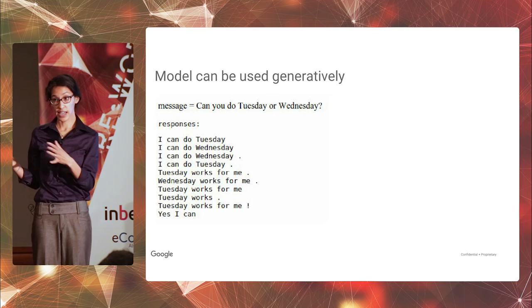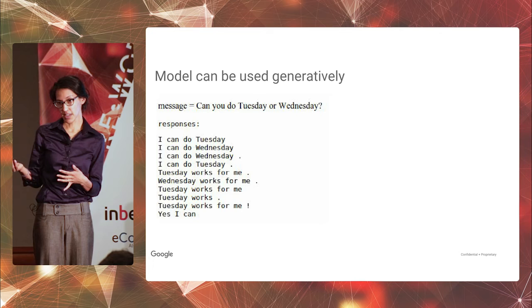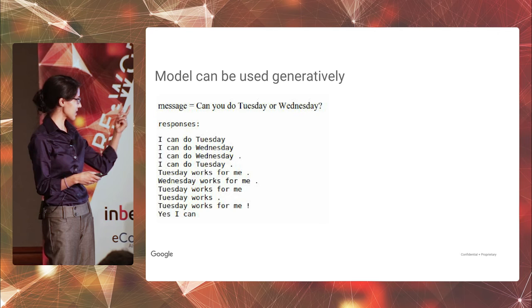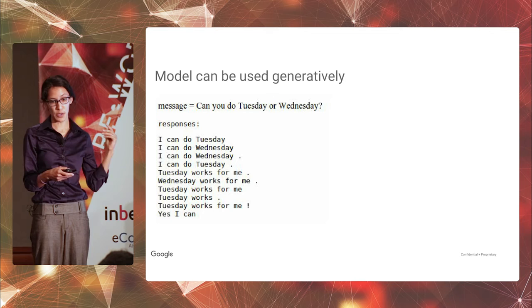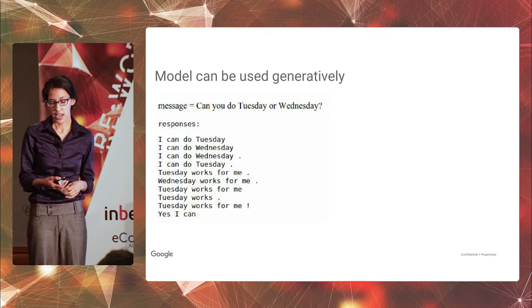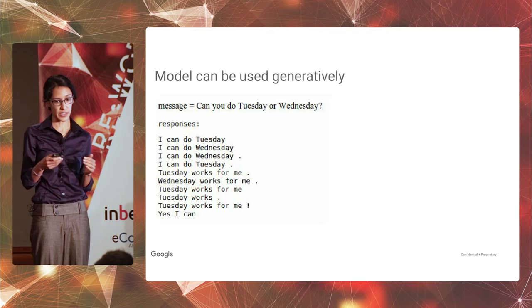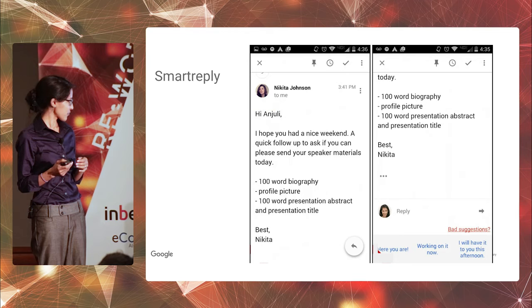So this model can be used completely generatively. What that means is that we can take any email and feed it in. And it can generate a ranked list of what it believes to be the best response emails. So this is just an example that I pulled that uses the same email from the beginning of my talk. Can you do Tuesday or Wednesday? And as you can see, the examples are things like I can do Tuesday. I can do Wednesday. Tuesday works for me. Wednesday works for me. And so not only are these all plausible and make sense in this context, but they're all grammatically correct. Even though, as I said, there's no extra grammar features or anything included in here. It just learns that from the data, what makes sense as a sentence.